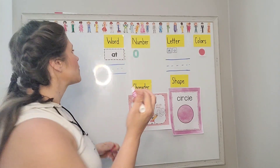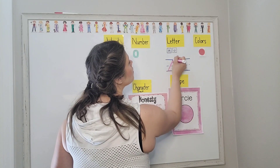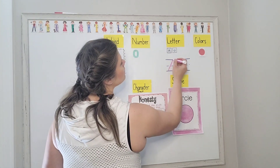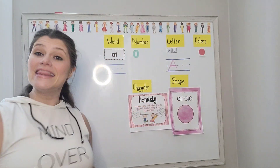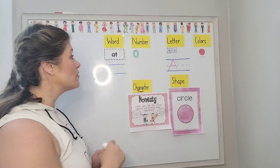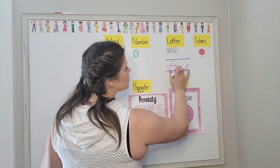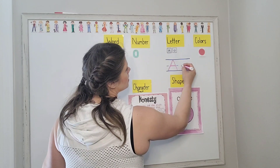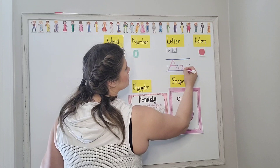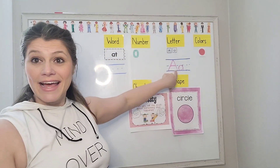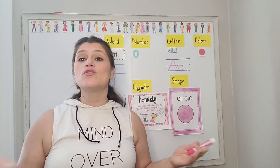Now we're going to practice writing A. To write a capital A, we start at the bottom line and make a line all the way to the top, then go back down, and connect it right in the middle where the dotted line is — and that is a capital A. Now we're going to make the lowercase a. The lowercase a has a circle and a line. Lowercase letters go below the dotted line, so we start at the top of the dotted line, go around to make a circle, and then come back down to make our line. So we have an uppercase A and a lowercase a, and A can either say its name and say 'A,' or it can make the 'ah' sound. You're learning so much — you're so smart.